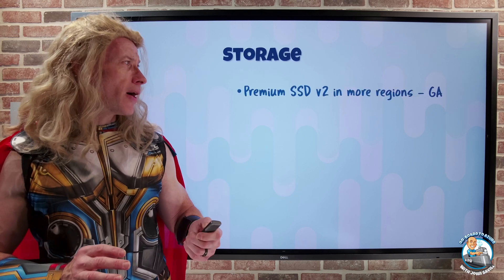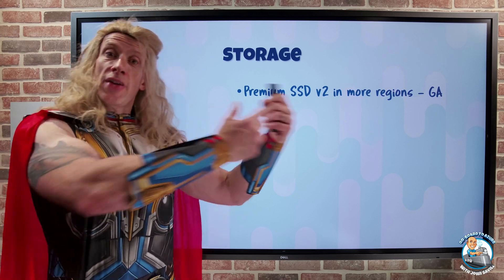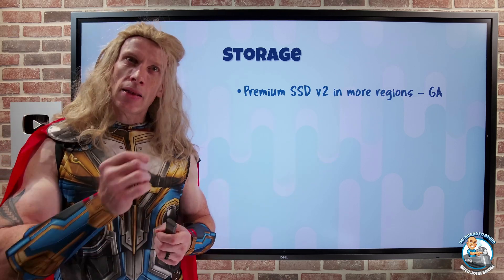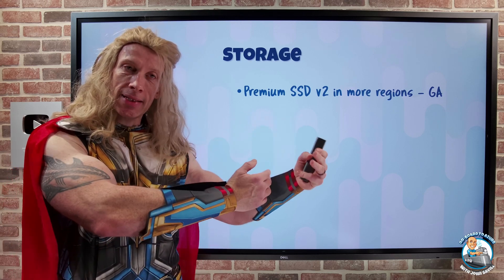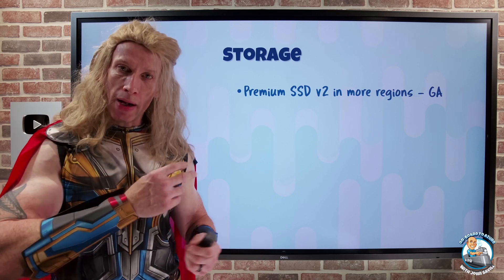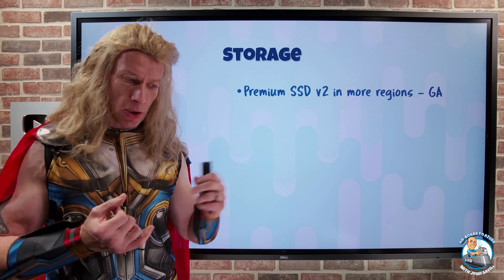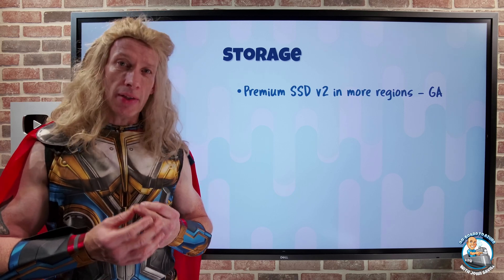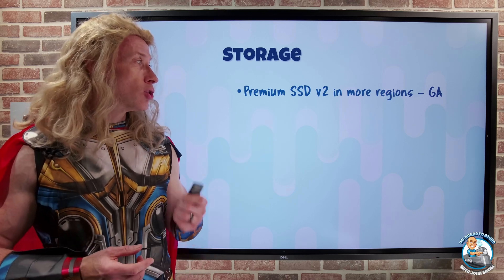On the storage side, Premium SSD V2 — the V2 version of Premium SSD — shares a lot with UltraDisk in that IOPS and throughput can be separately configured from the capacity. You can also dynamically change the IOPS and throughput while it's in use, and it has sub-millisecond latency. Now there are more regions: Germany West Central, Israel Central, Italy North, Spain Central, and Mexico Central all join the regions that can enjoy Premium SSD V2.